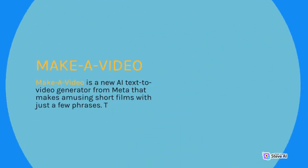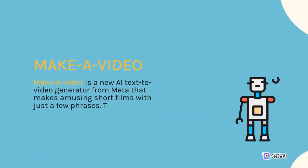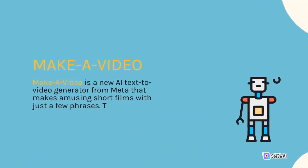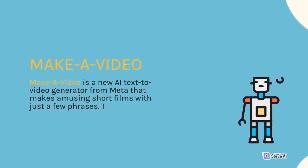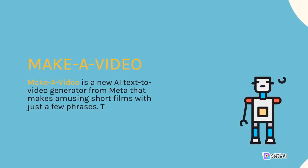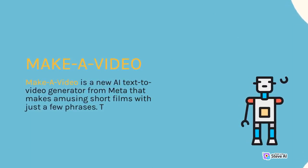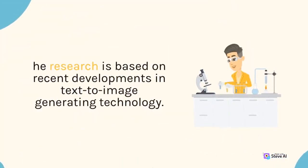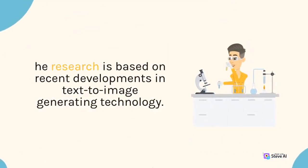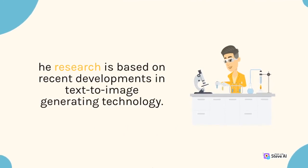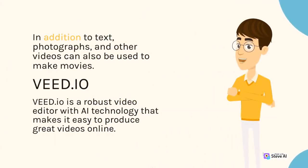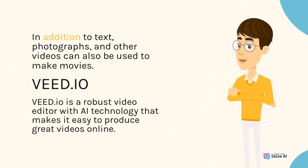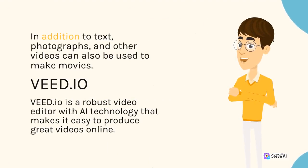Make a Video is a new AI text-to-video generator from Meta that makes amusing short films with just a few phrases. The research is based on recent developments in text-to-image generating technology. In addition to text, photographs and other videos can also be used to make movies.